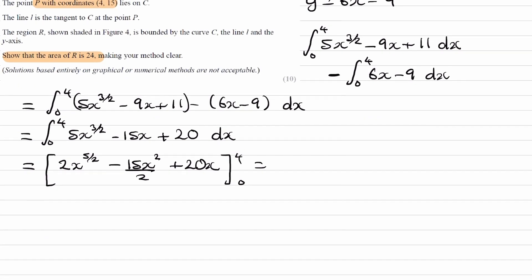Put in 4 into this, and we end up with 24. Put in 0, we get 0 obviously, and then the answer would be 24, which is what we were trying to show.